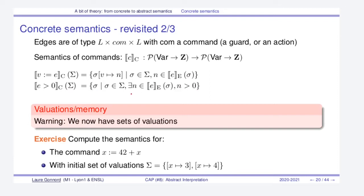I'll let you do the same exercise to understand the second semantics depicted on the slide. Be careful: we now have sets of valuations on the right-hand side of the semantics. As an exercise, compute the semantics with the initial set of valuations sigma and where the command is an assignment. Make a pause on your video and do the exercise.